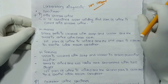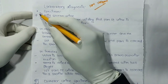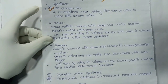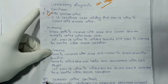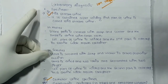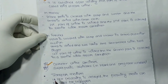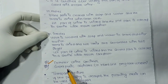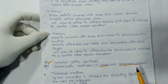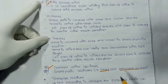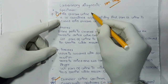First is specimen. There are three types: first, mid-stream urine; second, catheter urine specimen; and third, suprapubic aspirate — mainly used in infants and pregnant women.